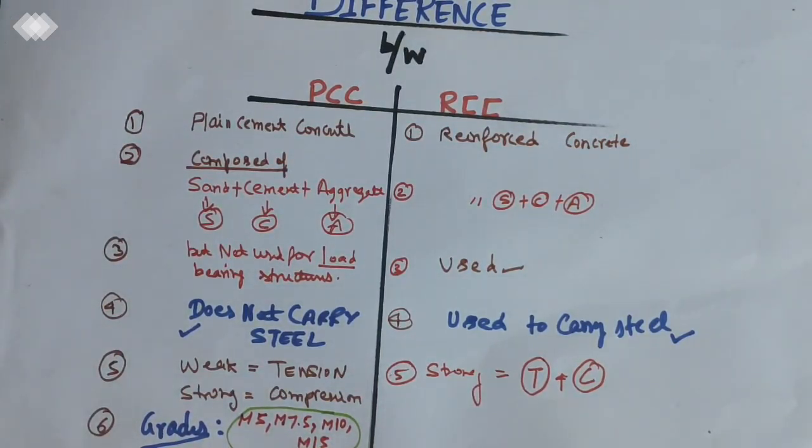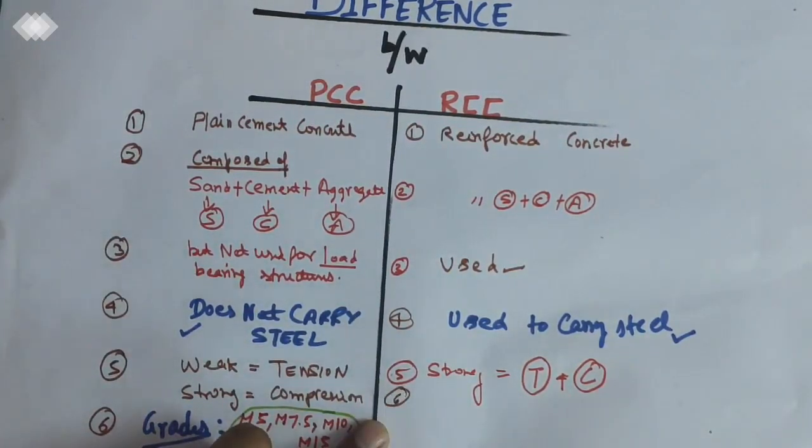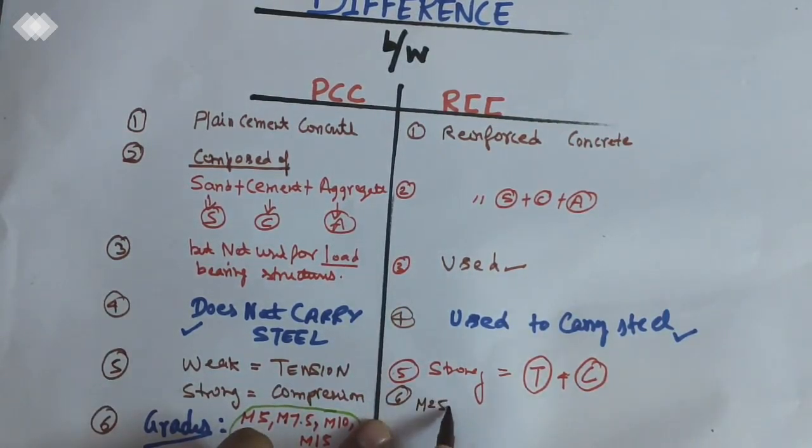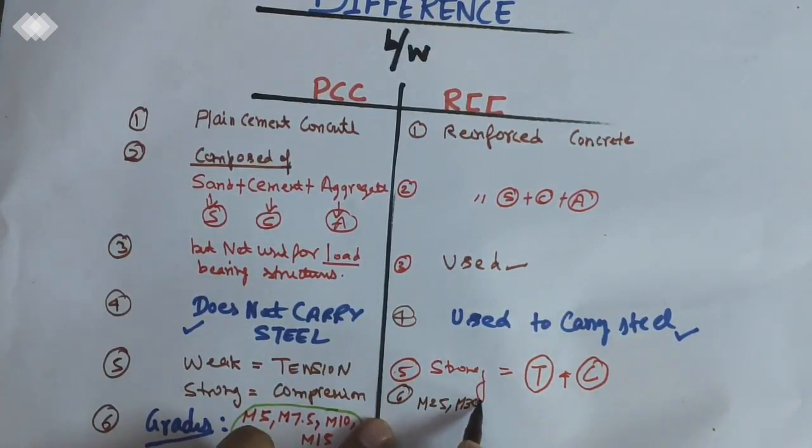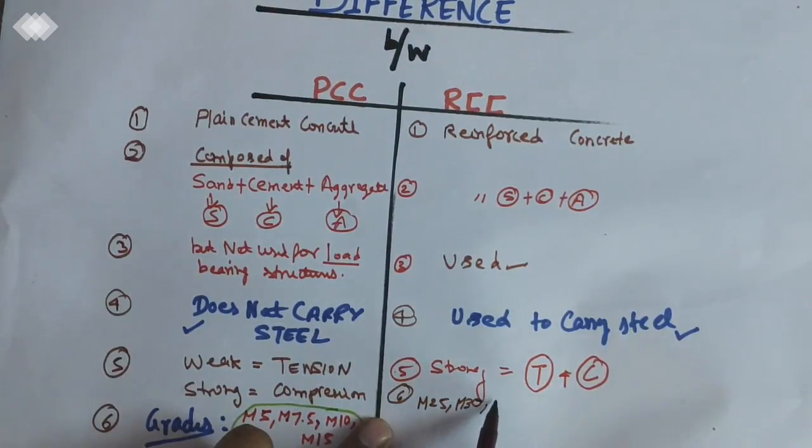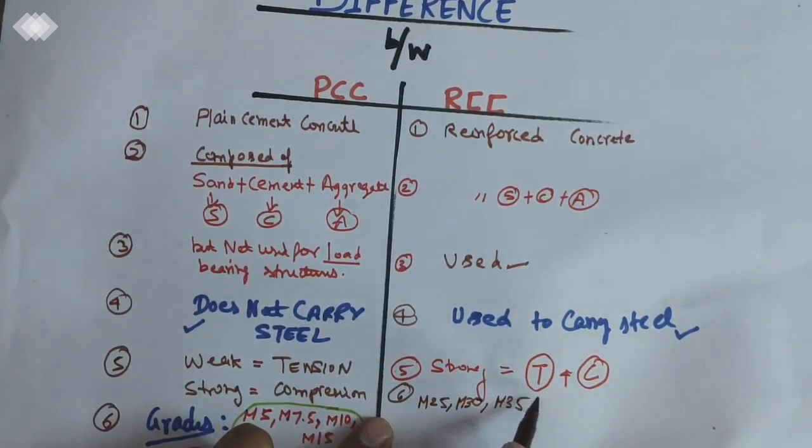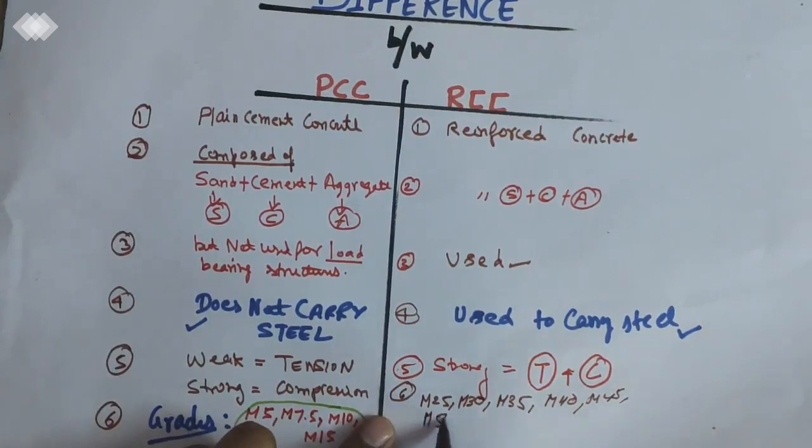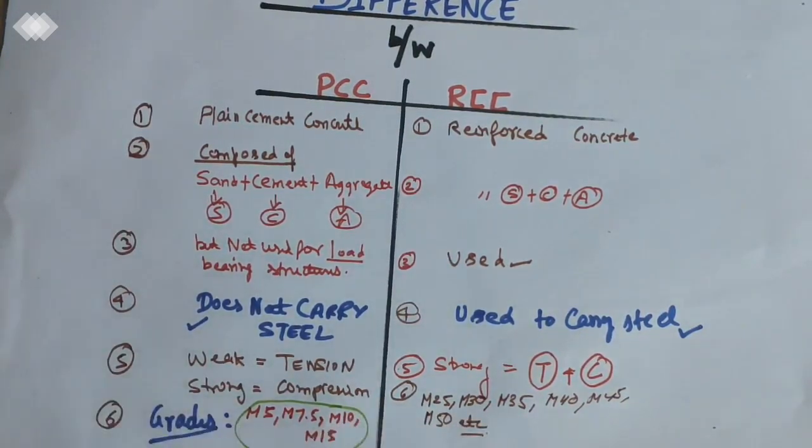Now in RCC, what kind of grades do we use? I will discuss in this column. In RCC, what kind of grades we use? We use M25, M30, M35, M40, M45, M50, or higher grades you are using. So we use these grades.